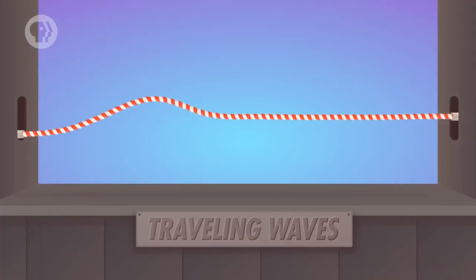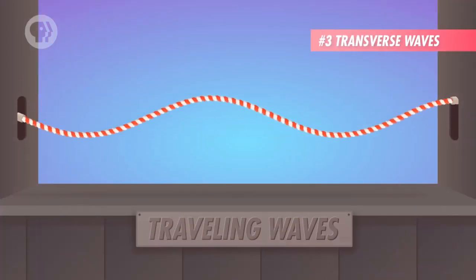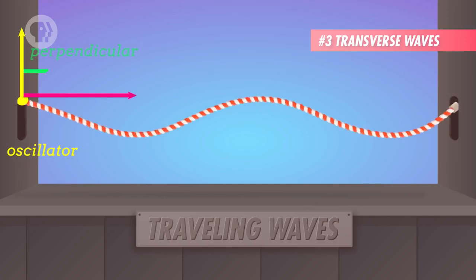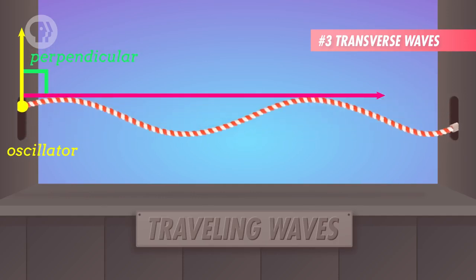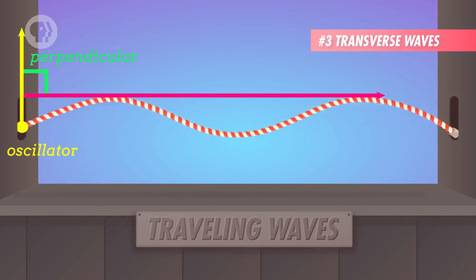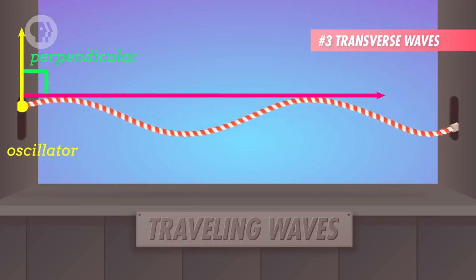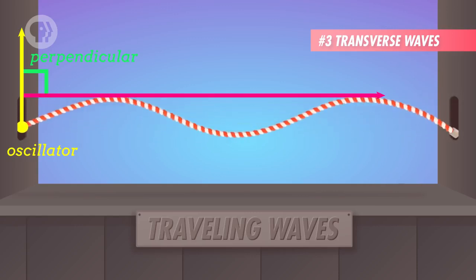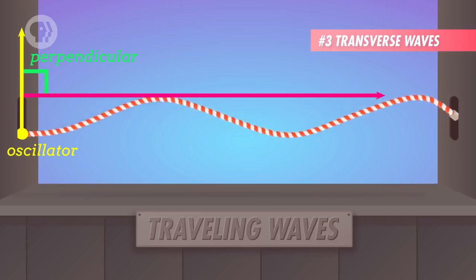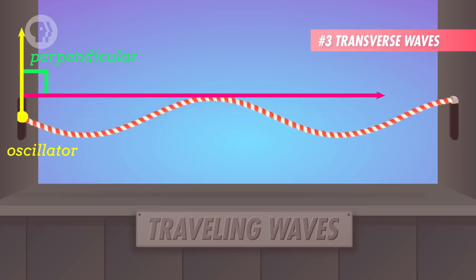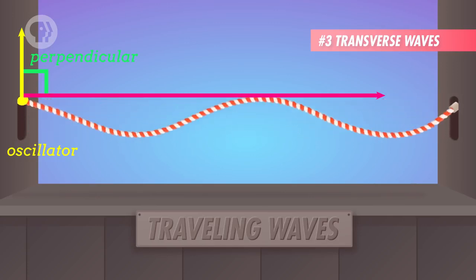But the waves we've mainly been talking about so far are transverse waves. Ones in which the oscillation is perpendicular to the direction that the wave is traveling in. When a wave travels along this rope, for example, the peaks are perpendicular to the rope's length. The same thing was mostly true for the waves that you made on the trampoline. The waves were traveling along its surface horizontally, but the peaks were vertical.